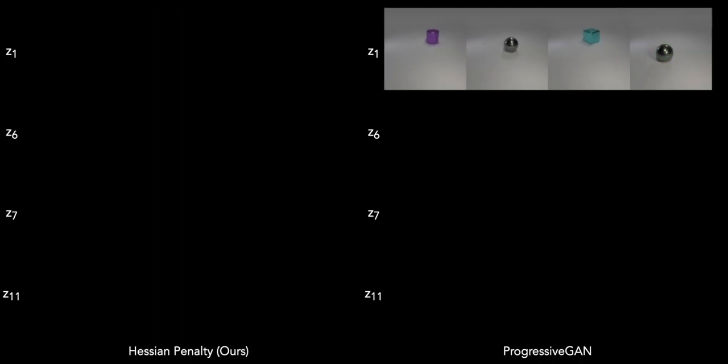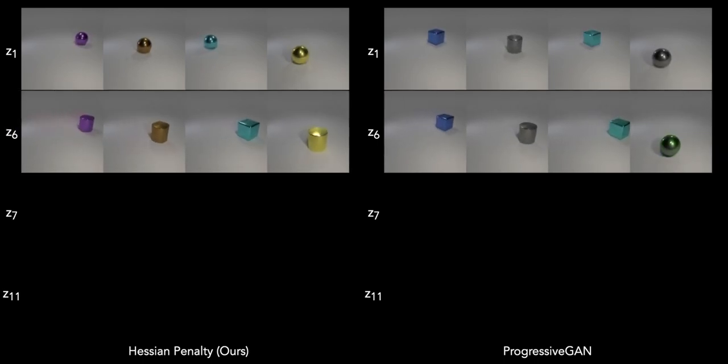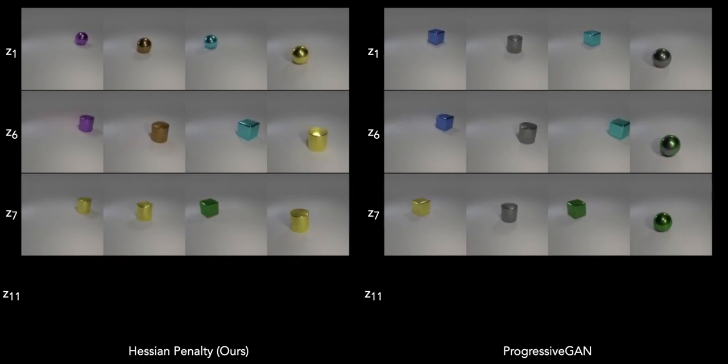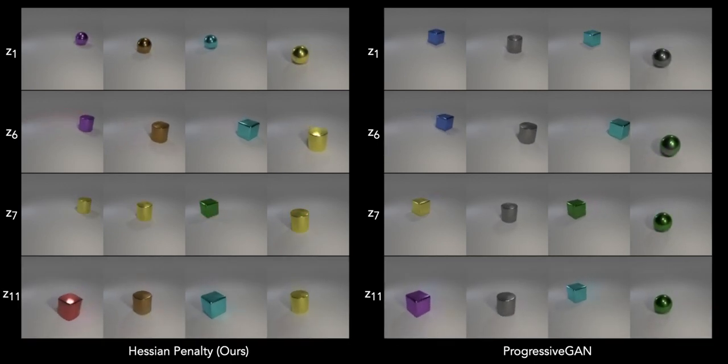Now we'll show results on Clever images with four factors of variation. On the right, we show four z-components that progressive GAN learned, and then on the left, we show those same z-components after fine-tuning with our regularizer. The Hessian penalty successfully uncovers components that control shape, horizontal position, color, and vertical position, although the disentanglement is imperfect.